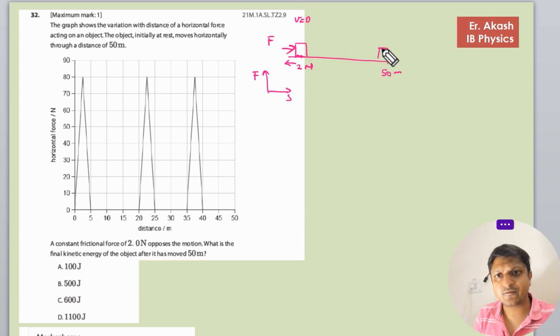So first of all, remember that we know that work is change in kinetic energy. Initially the kinetic energy is zero and the final kinetic energy we need the answer in that.